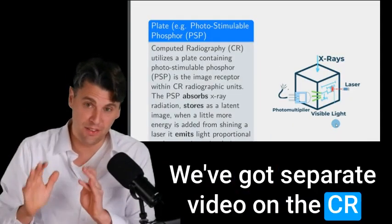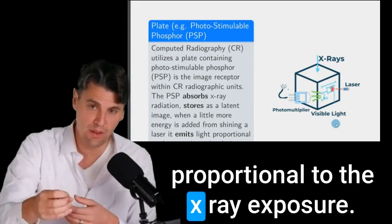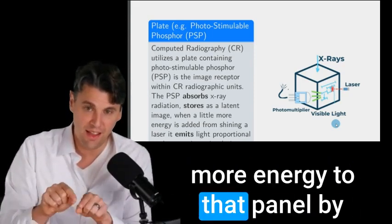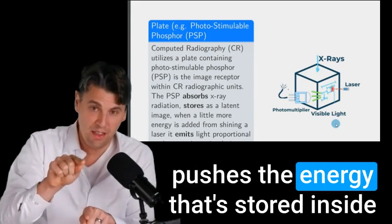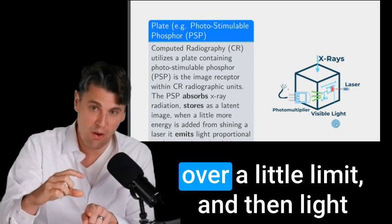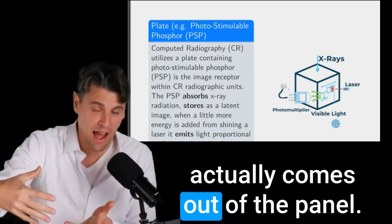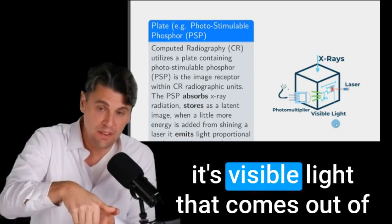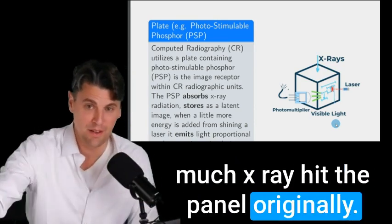We've got separate video on the CR panels themselves. They store a signal, which is proportional to the x-ray exposure. And when you add a little bit more energy to that panel by shooting light on it, it actually pushes the energy that's stored inside over a little limit, and then light actually comes out of the panel. So if you shine a laser on it, then it's visible light that comes out of the panel that's proportional to how much x-ray hit the panel originally.